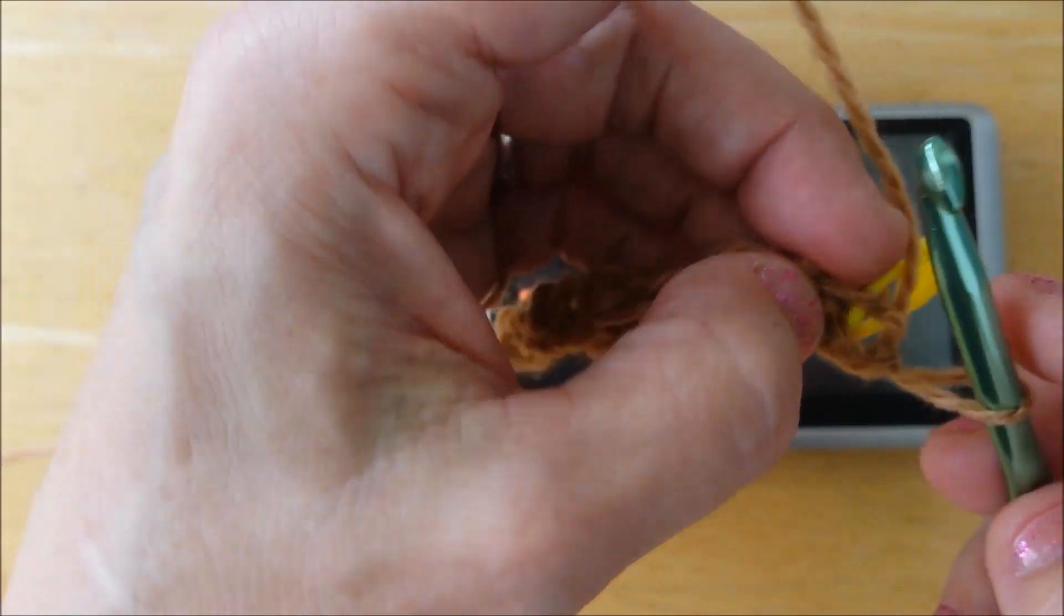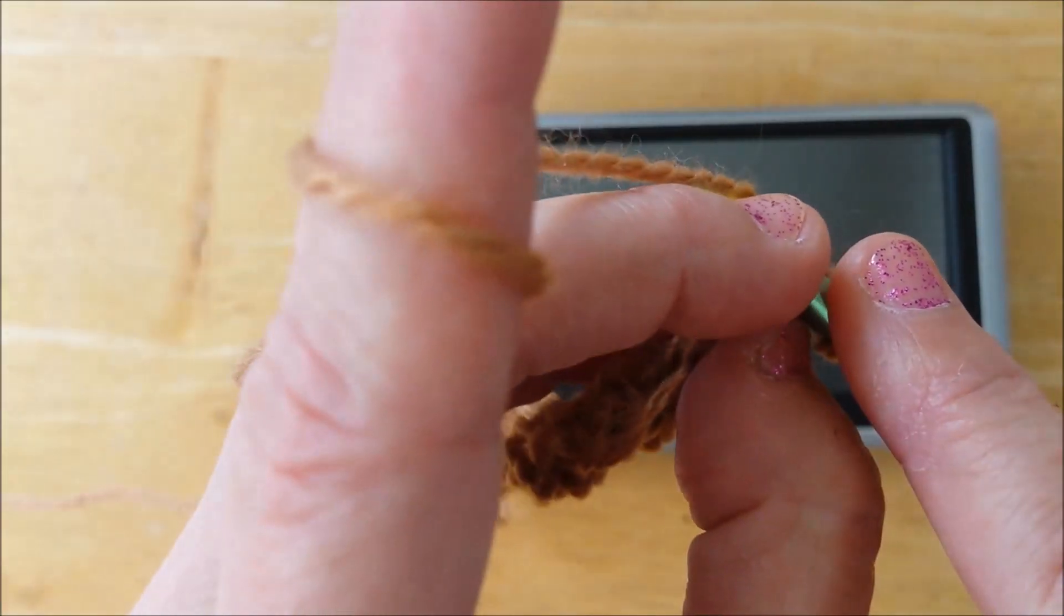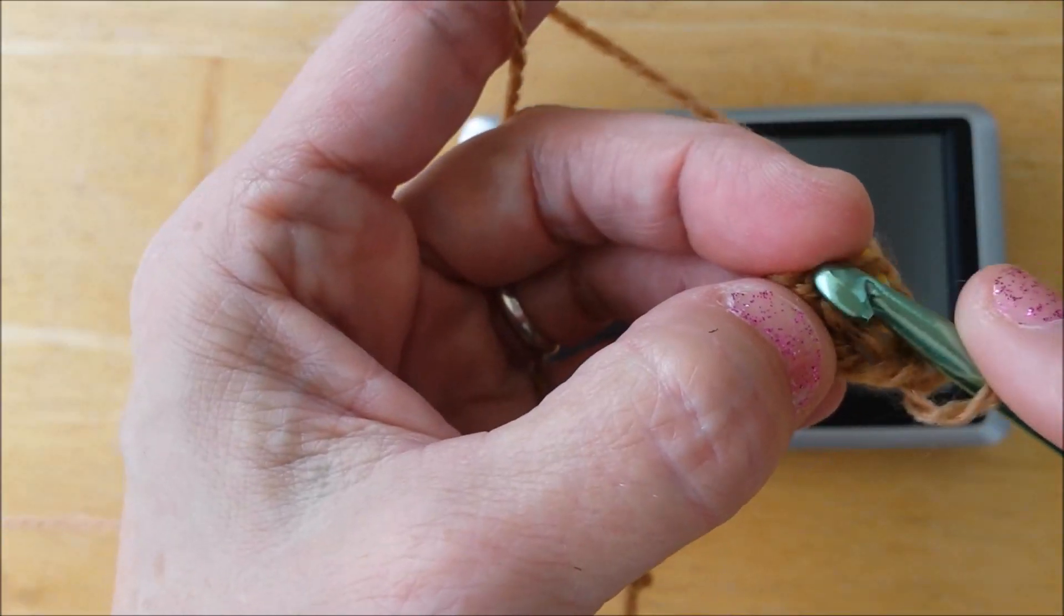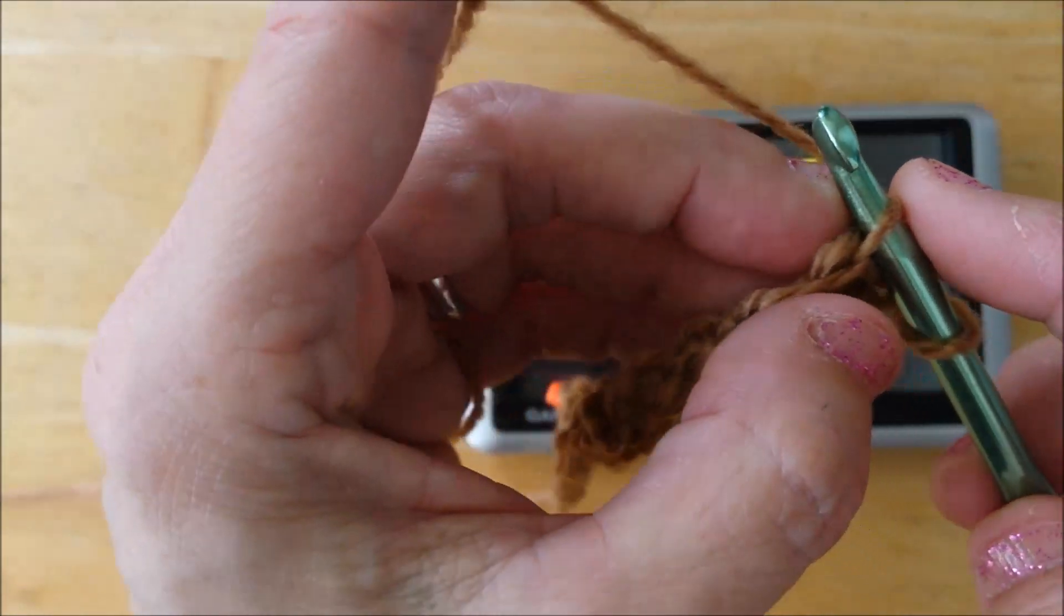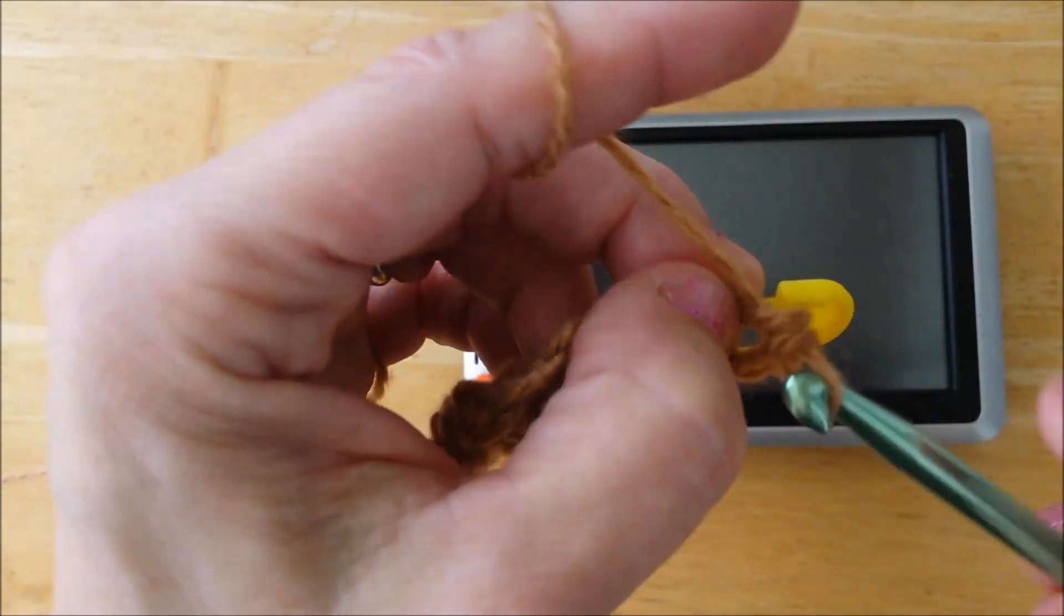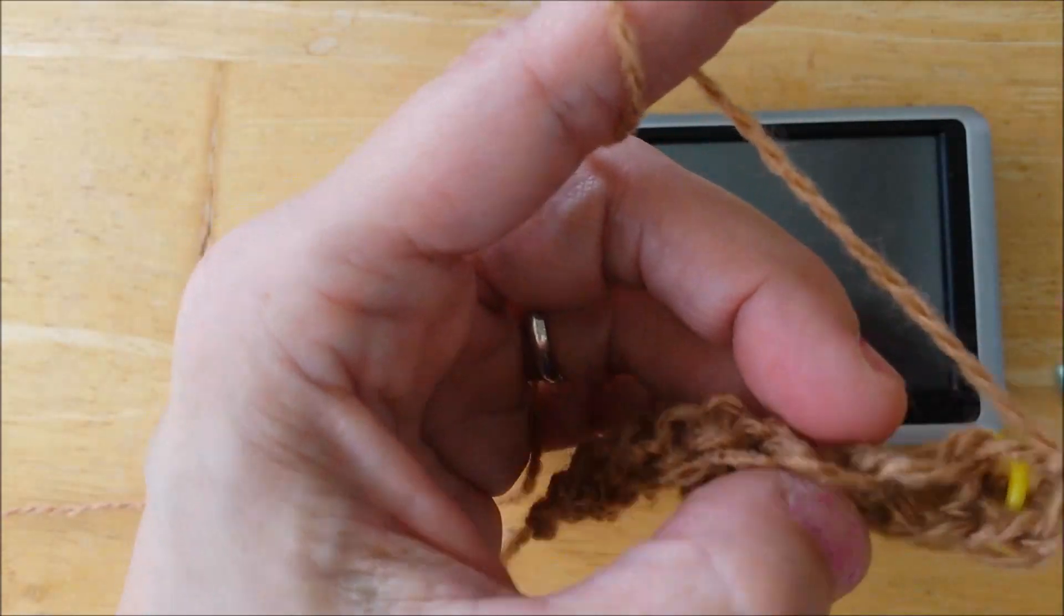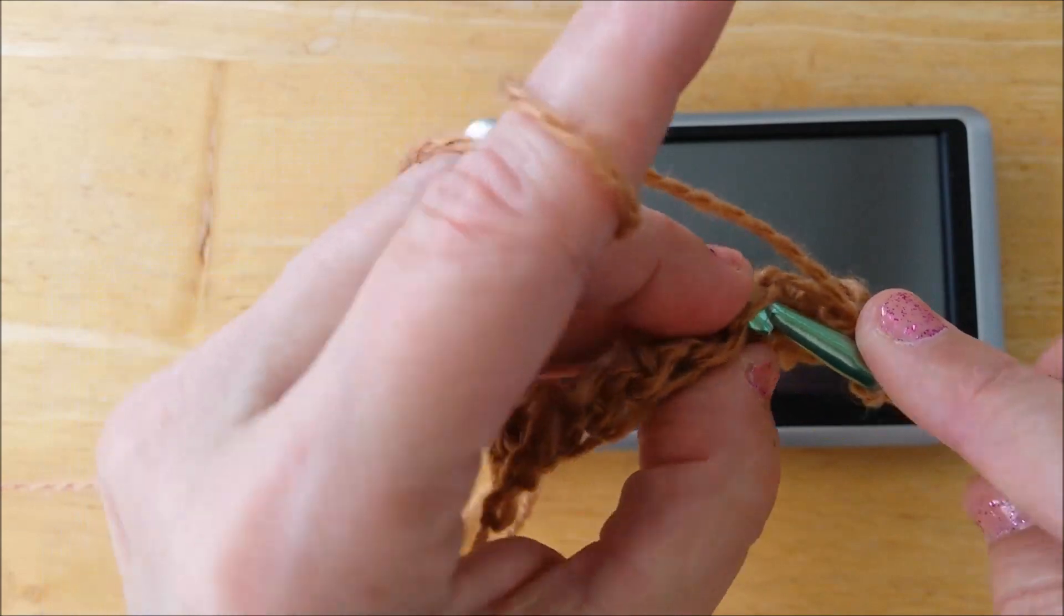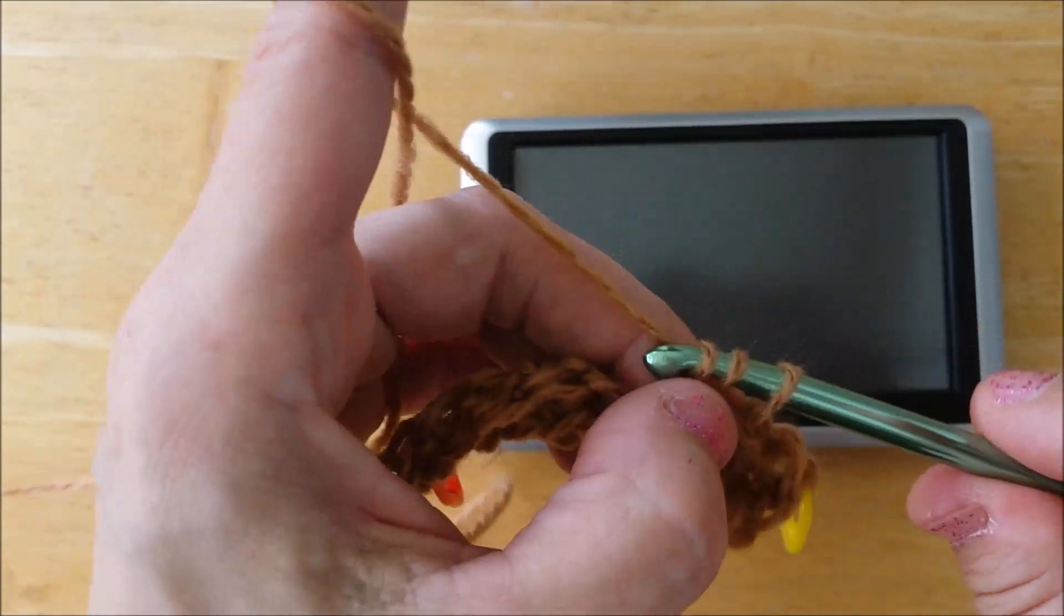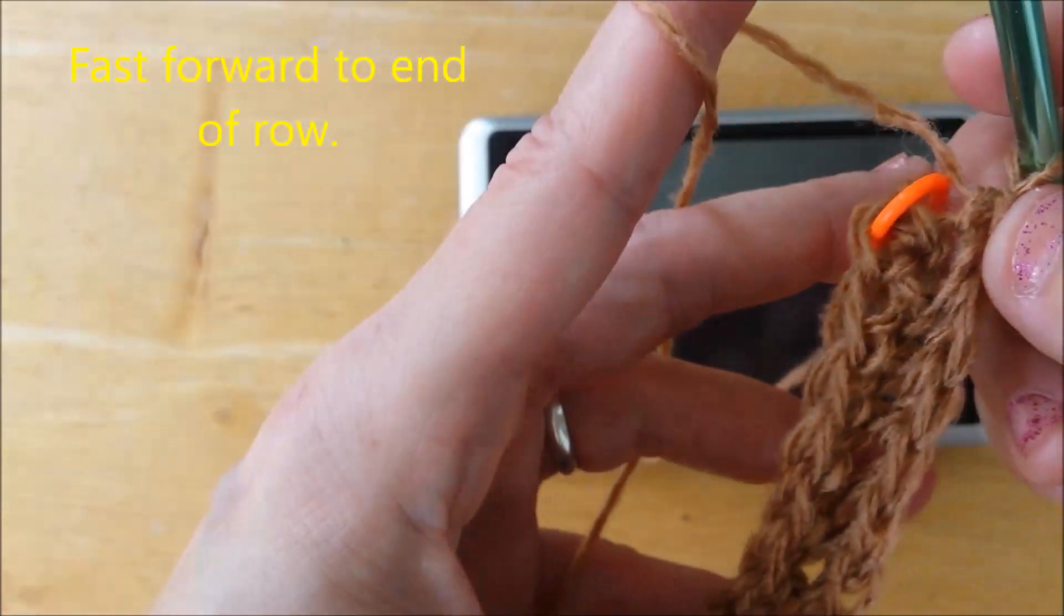So I'm going to turn it, insert my hook in this. Now this is my top of the V, since I've turned it. Single crochet. And I just go all the way back, keep doing single crochets all the way down. Okay, now I've went all the way to the end.